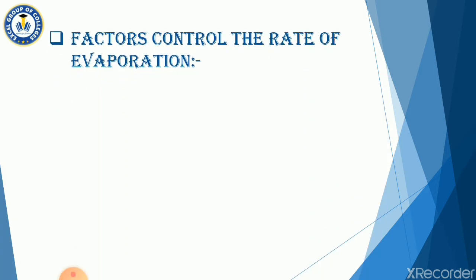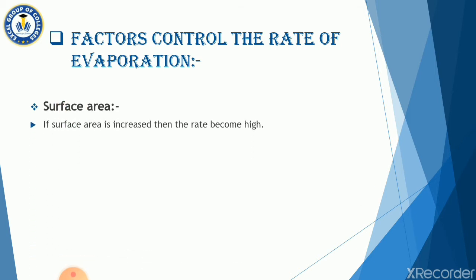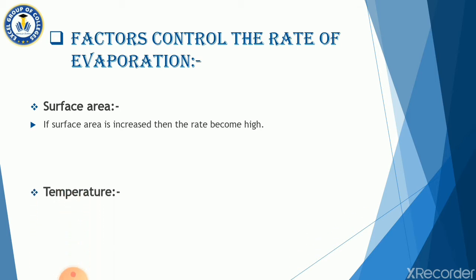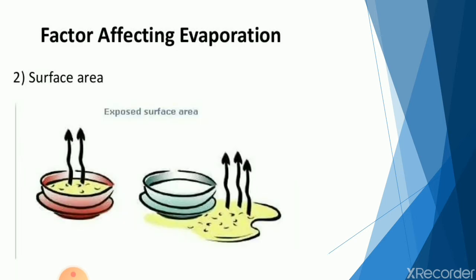Next are the factors that control the rate of evaporation. The first factor is surface area. If the surface area is increased, then the rate becomes high. If the temperature is high, the rate is also high. When the surface area is large, more molecules come to the surface.